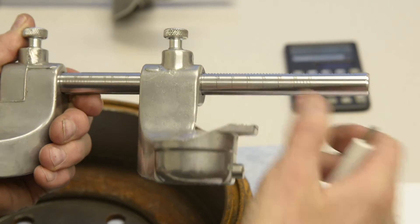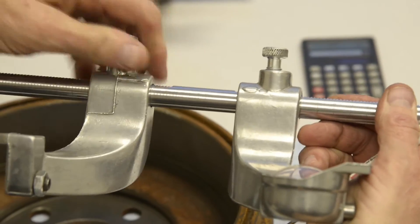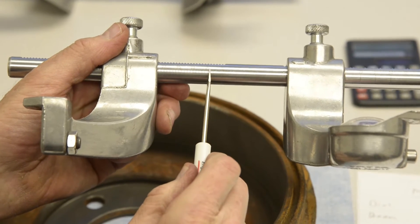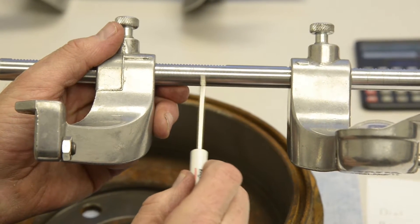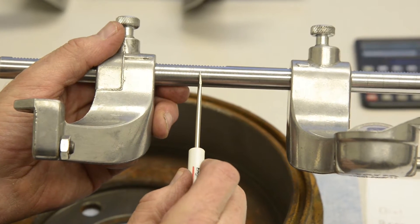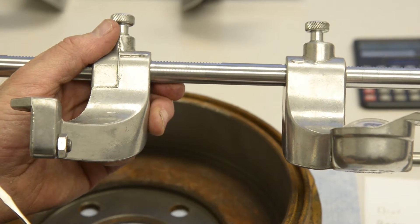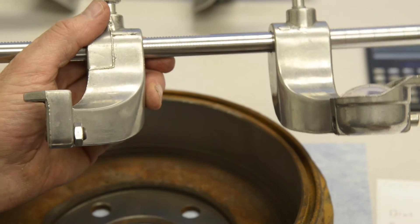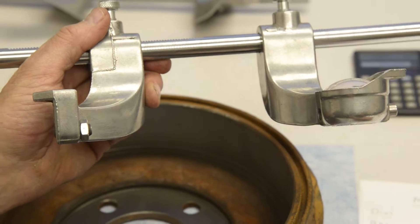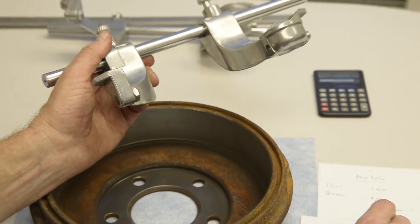There is one more set of lines to pay attention to. In between each of these large numbers is another little slash or hash mark, a little graduation on the beam, and each of those lines represent two millimeters.